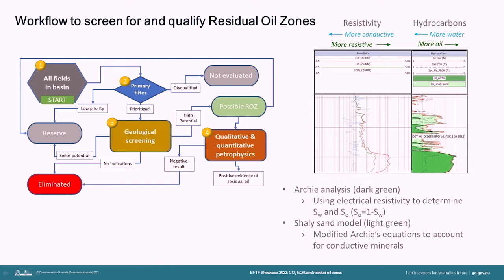Petrophysical analysis included looking for qualitative indications of residual oil zones, followed by quantitative calculation of the oil saturation using resistivity logs. Resistivity-based methods are the main way that we can determine oil saturation, and are based on the fact that saline formation water conducts electricity, whereas both oil and the majority of rock grains don't. So zones that have oil show a higher resistivity than just water-saturated rocks. You can see in the example here that the more green in the hydrocarbon column indicates a higher oil saturation.